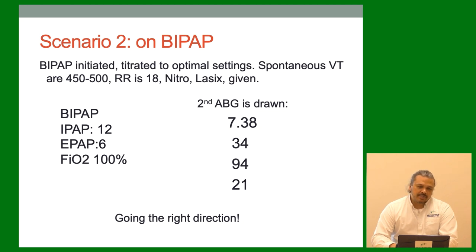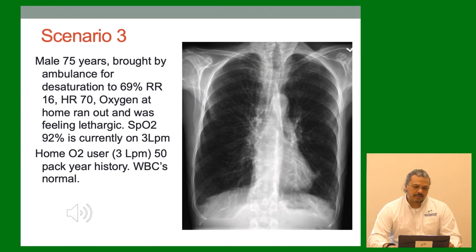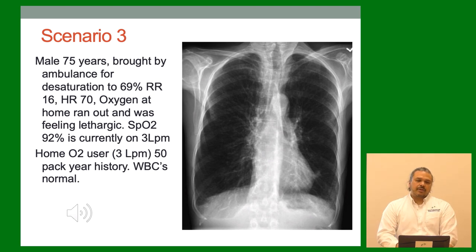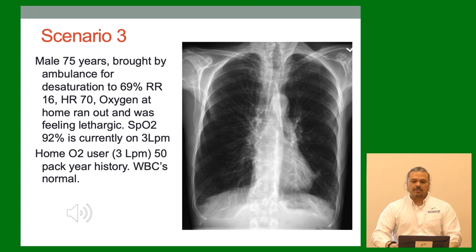Next scenario: Male, 75, brought in by ambulance for desaturation to 69%, heart rate 116. Oxygen ran out and was feeling lethargic. Currently SAT 92% on 3 liters. Home O2, 50-pack-year history, white blood count normal. X-ray: even just looking at it, you can tell by the x-ray what kind of patient this is — COPD. Tall lungs, flattened diaphragm. His lungs are so bad they need every bit of surface area because of damaged alveoli. No shortness of breath noted, patient says he feels fine, but there's concern for confusion. ABG: 7.42 / 56 / 59 / 35.